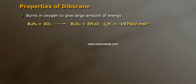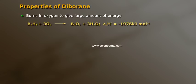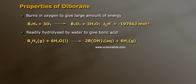Properties of diborane: it burns in oxygen to give a large amount of energy — B2H6 + 3O2 gives rise to B2O3 + 3H2O, with ΔH = −1976 kJ/mol. It is readily hydrolyzed by water to give boric acid: B2H6 + 6H2O gives rise to 2B(OH)3 + 6H2.